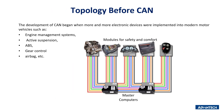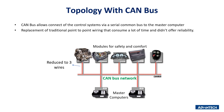Before CAN appeared, as more electronic devices were implemented in modern vehicles — such as engine management systems, active suspension, ABS, gear control, airbags, etc. — all needed connection to a master host, which meant complex point-to-point wiring. CAN bus proposed a protocol connecting control systems via a serial common bus, replacing traditional point-to-point wiring with a simpler three-wire bus that saves time and improves reliability.